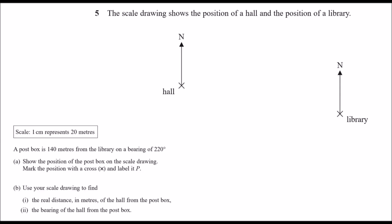Number five: a scale drawing shows the positions of a hole and a library. The scale is 1 cm = 20 meters. The post box is 140 meters from the library on a bearing of 220 degrees — that's 7 cm on paper. Mark the position of the post box with a cross labelled P. This is a bearing and scale drawing question; I've already solved it on screen and will walk through the method.